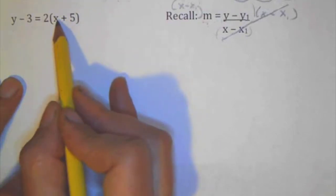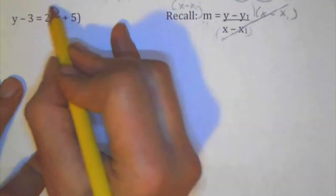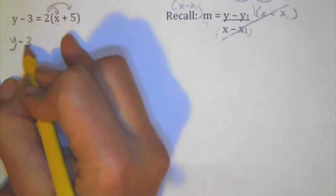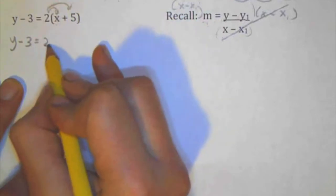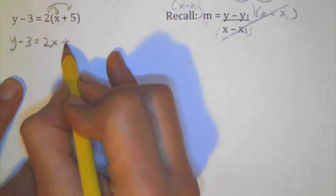So I'm going to use the distributive property first. So I'm just going to write the left side just as it is, and then I'm going to use the distributive property. 2x and 2 times positive 5 is 10.